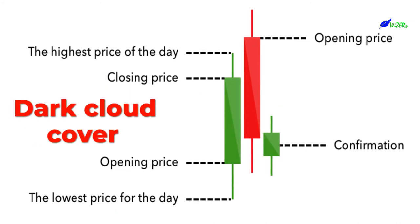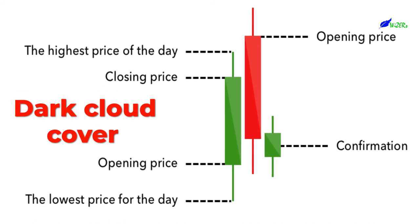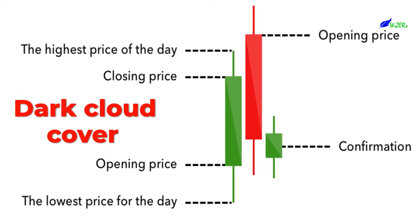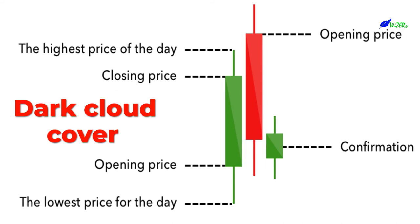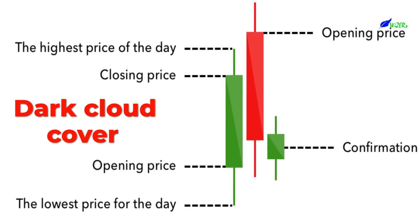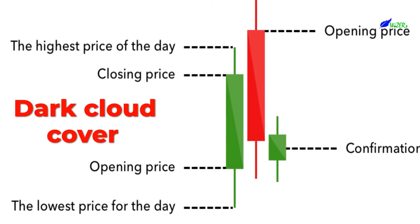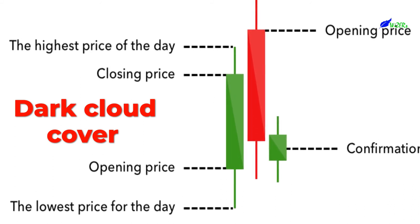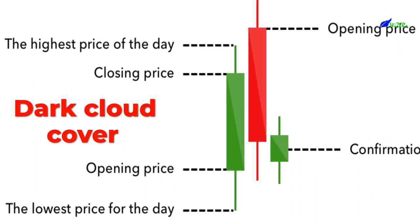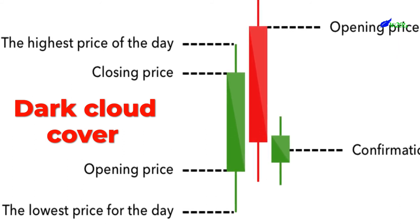Dark Cloud Cover. The Dark Cloud Cover candlestick pattern indicates a bearish reversal — a black cloud over the previous day's optimism. It comprises two candlesticks: a red candlestick which opens above the previous green body and closes below its midpoint. It signals that the bears have taken over the session, pushing the price sharply lower. If the wicks of the candles are short, it suggests that the downtrend was extremely decisive.